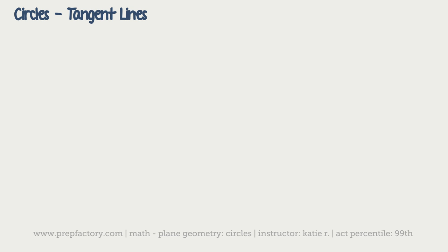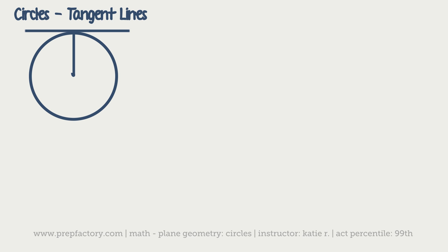The next thing to know about circles is tangent lines. A tangent line is a line that touches a circle at one point and is perpendicular to the radius. Because tangent lines are perpendicular to the radius, any time you see one in a problem, you're going to draw a right triangle. If I have a tangent line, I'd draw a radius in to make the right triangle.